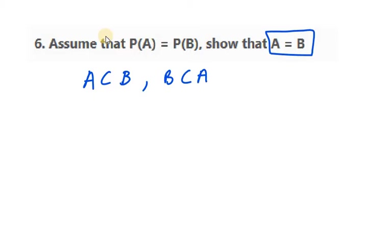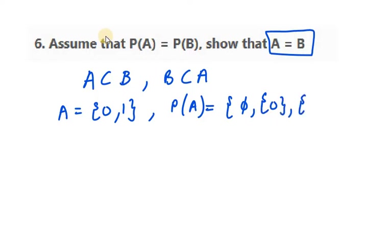So for example, let's say that we have a set A with elements 0 and 1, and suppose we have P(A). We have elements as empty set, then we have {0}, then we have {1}, then we have {0,1}. So these are the elements of P(A).